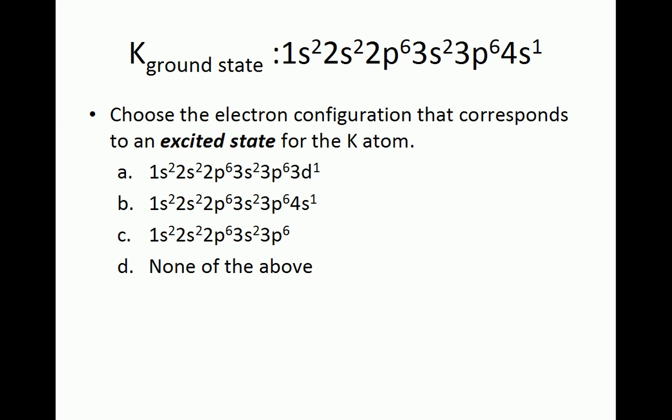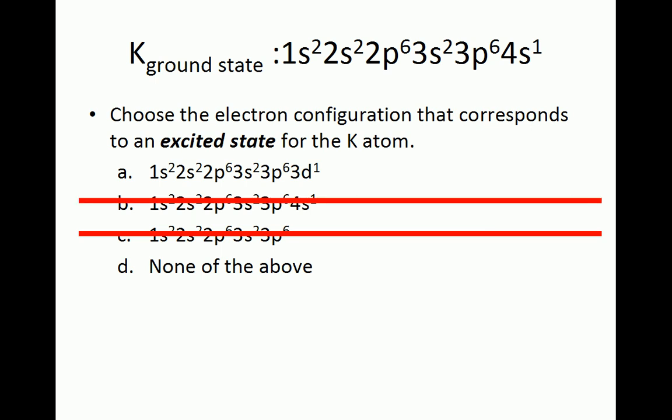Now, back to the original question. We see immediately that we can eliminate choice C, because it has only 18 electrons, and choice B, because it is the ground state electron configuration of potassium, leaving us with choices A and D to consider.